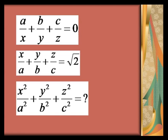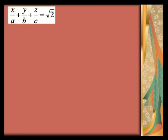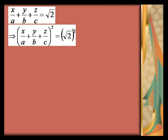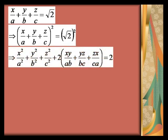Let us find out. Since x/a + y/b + z/c = √2 is given to us, by squaring both sides, (x/a + y/b + z/c)² = (√2)² = 2, which expands to x²/a² + y²/b² + z²/c² plus the cross terms equals 2.